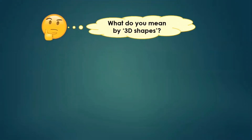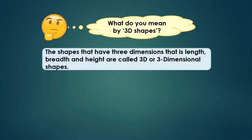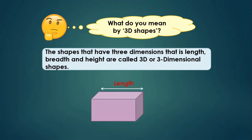So what do you mean by 3D shape? 3D — D stands for dimensions. So the shapes that have three dimensions, that is length, breadth, and height, are called 3D or three-dimensional shapes. So here is a shape — it's a cuboid. This is the length, it has breadth, and it has height. So this is how it has three dimensions: length, breadth, and height are the dimensions of a given 3D shape, which is a cuboid.